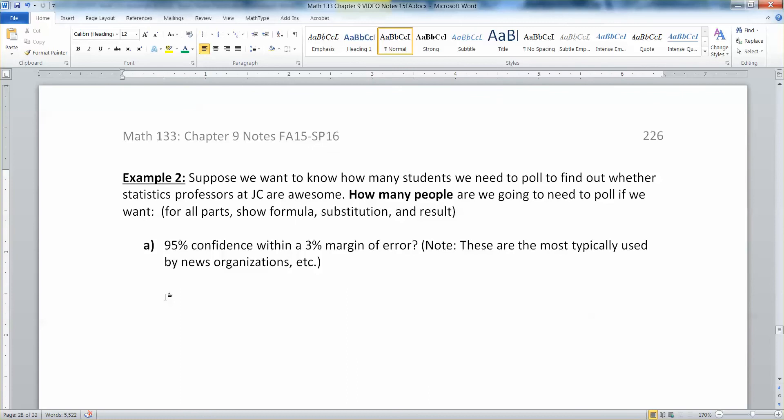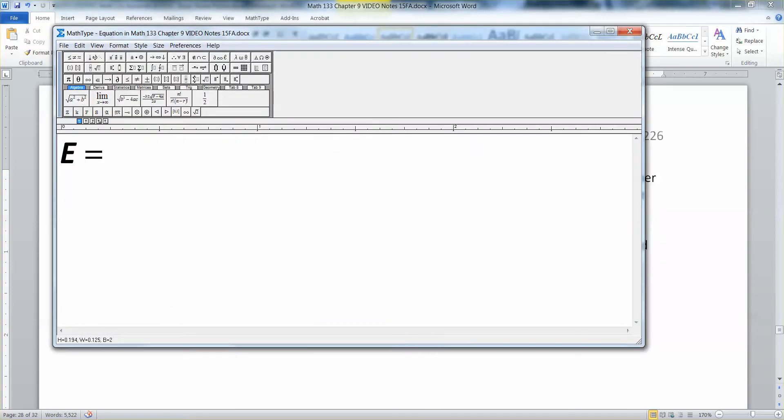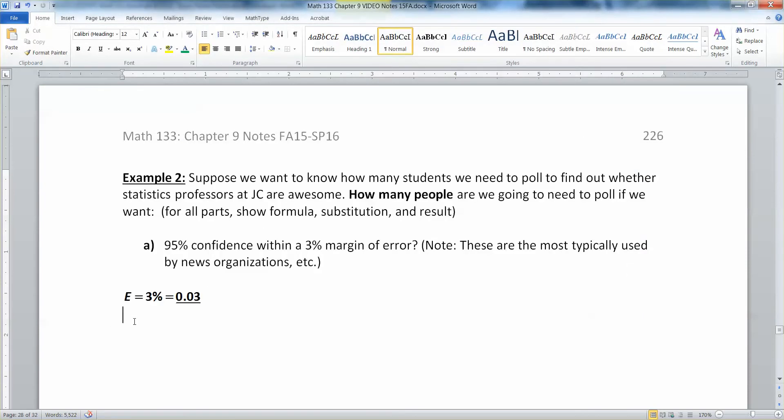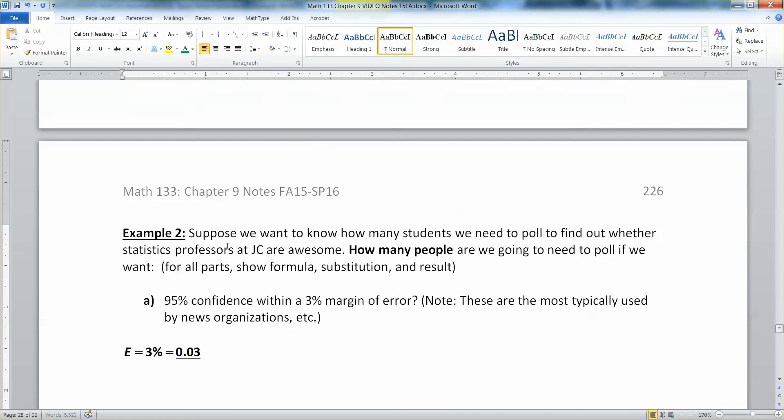First of all, error. Error is 3%, but if you remember, according to that formula, it said it had to be a decimal. So you have to go and find the decimal, and it's 0.03. So there's our error. Then we need to know our alpha. But remember that your confidence level is right here. So since that's your confidence level and the margin of error, the margin of error gets us our 3% right here, and then our confidence level is 95%.